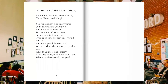Our second ode is called Ode to Jupiter Juice. You feel squishy like jiggly water. You can stick like crazy glue. You are pink like a rose. We cannot drink or eat you, but we want to touch you. If we open you, slippery jello would spill out.